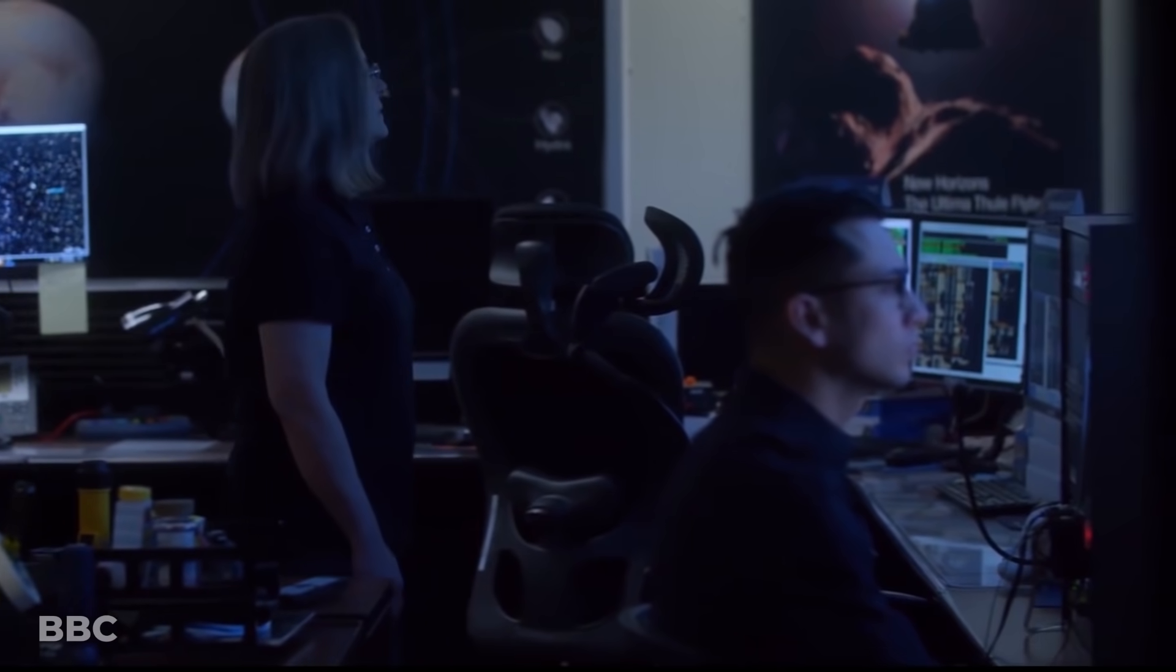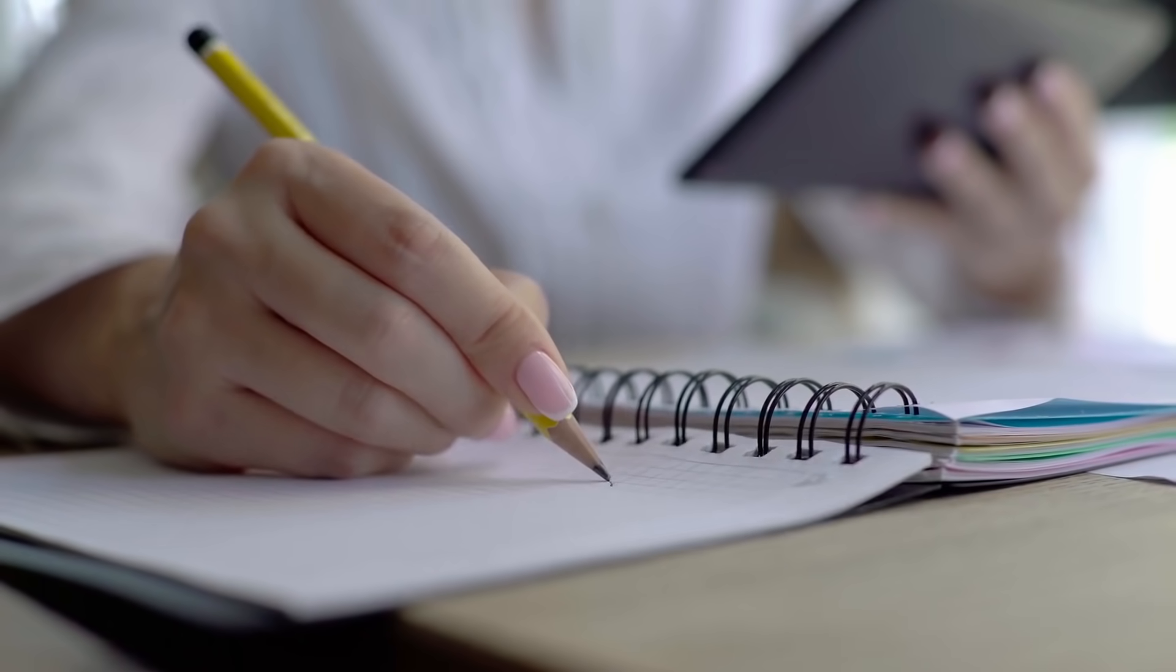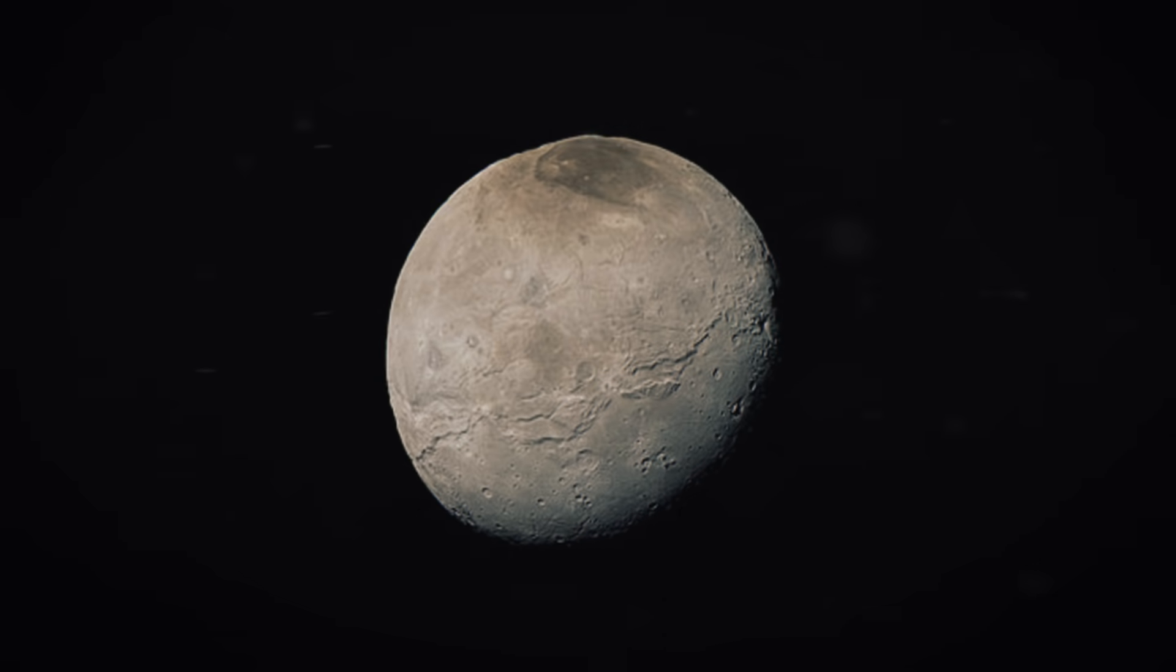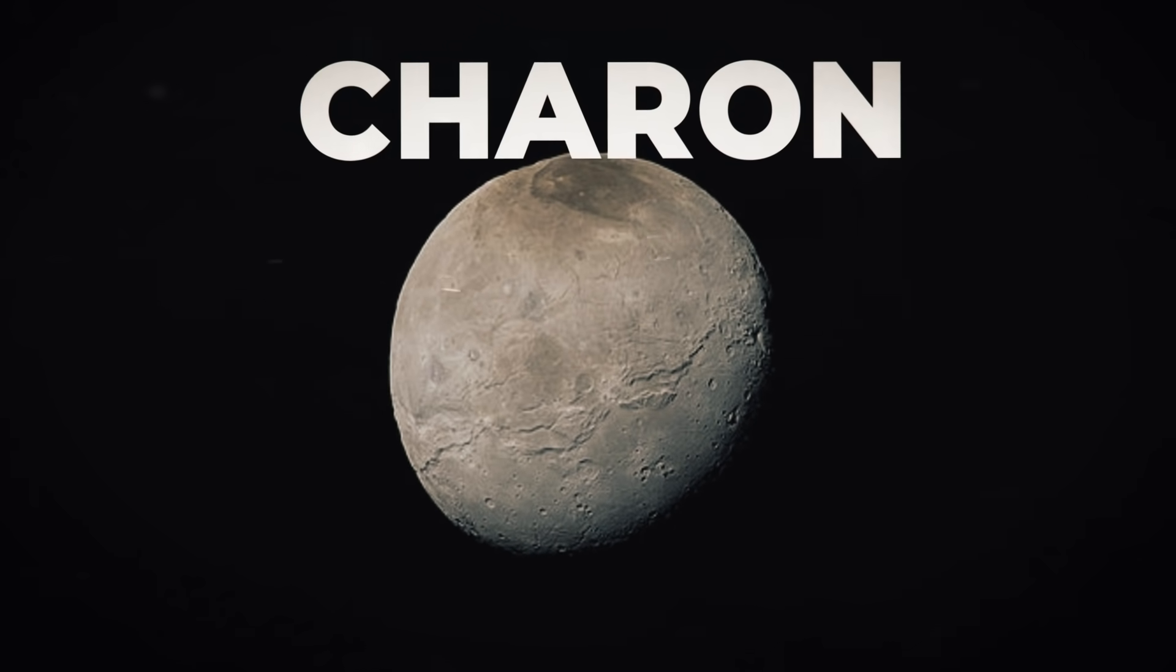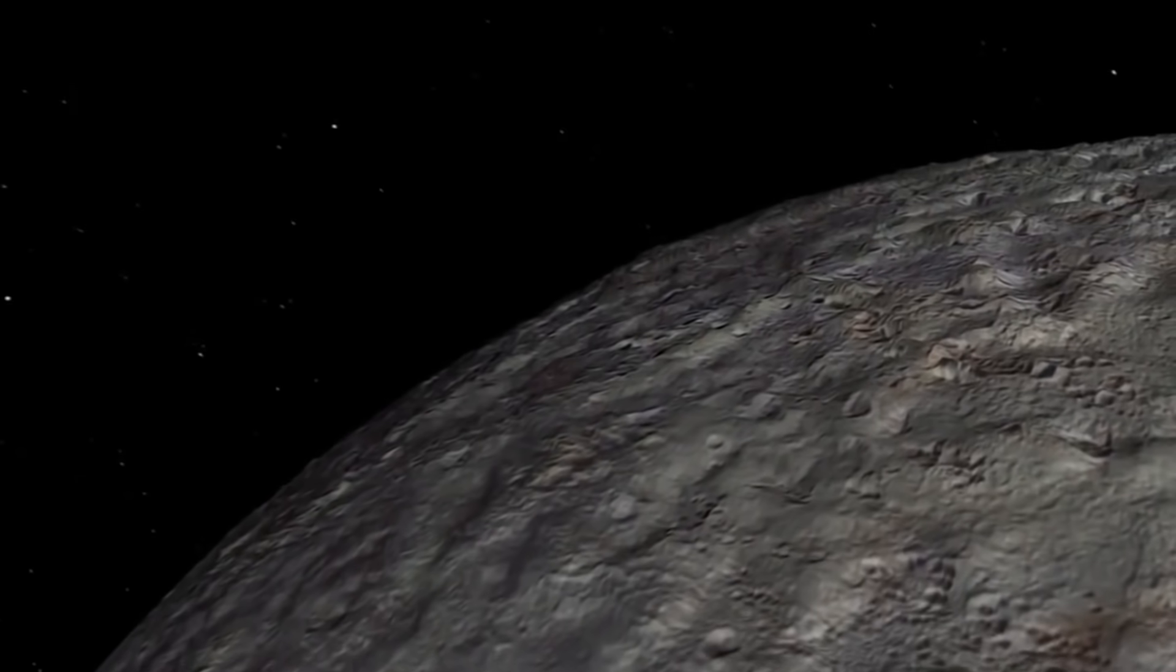But the team behind the mission had a thought. Based on their research and hard work, they determined that the dwarf planet's largest moon, Charon, might reflect enough light to cast some on Pluto's surface.